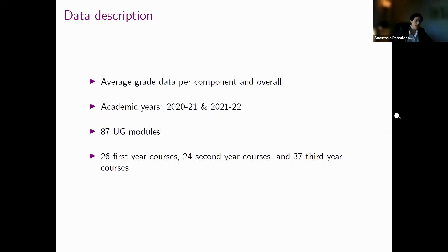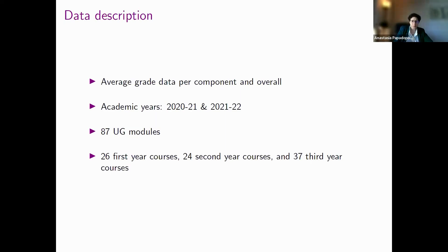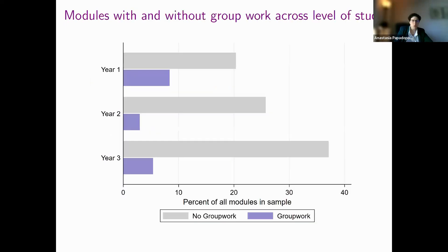So till now we have some data on average grade for the last two academic years, and those are coming from 87 undergraduate modules. We are actually increasing our sample at the moment. So this is a preliminary analysis on the data that we have, but we have already seen some interesting patterns emerging from this data. Proportionally, the biggest amount of modules with group work come from first year courses, then third year courses, and at the end second year courses, and in our sample we have a larger proportion of third year courses because of the elective courses for the last year.